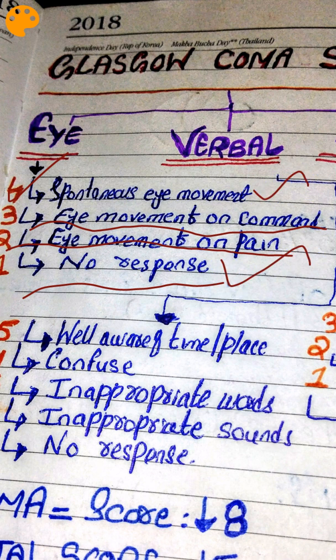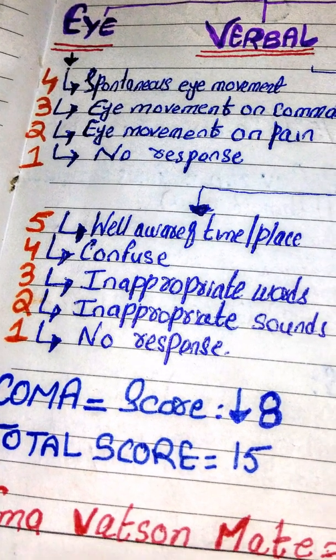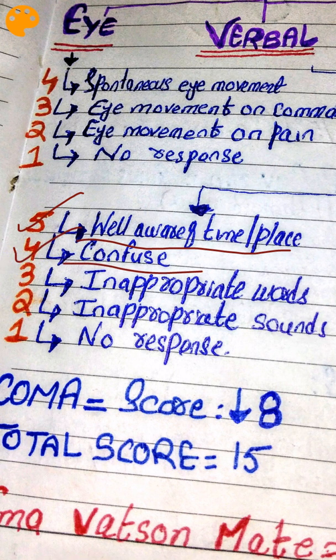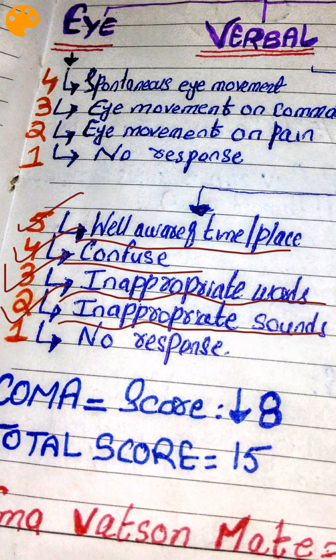Now let's discuss the Verbal component. V5 means the patient is well oriented — aware of time, place, and position. V4 means the patient is confused, not able to respond correctly about time, place, and position. V3 means the patient is using inappropriate words. V2 means the patient is producing inappropriate sounds, not able to form proper words. V1 is the worst response — no response at all.